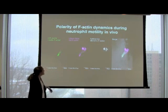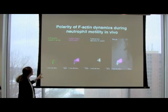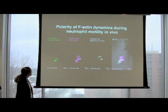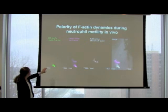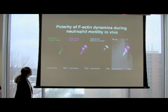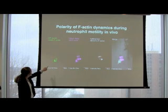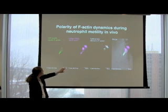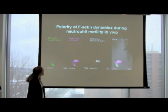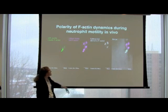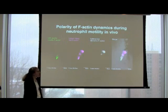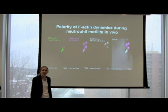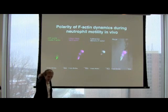One of the first images I'd like to show is our ability to finely look at the polarity of cell signaling as neutrophils are migrating in vivo. We've used two probes: one for stable F-actin using the eutrophin probe fused to GFP, which labels actin at the rear of the neutrophil as it migrates in vivo. We also use LIFACT-Ruby, which labels both dynamic and stable F-actin, and we can subtract this image to look at dynamic F-actin at the leading edge. This shows the temporal and spatial dynamics of F-actin as neutrophils migrate in vivo.